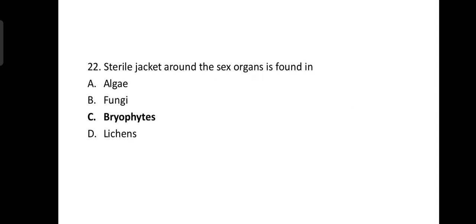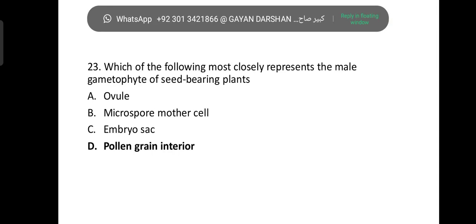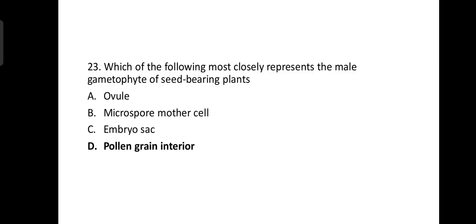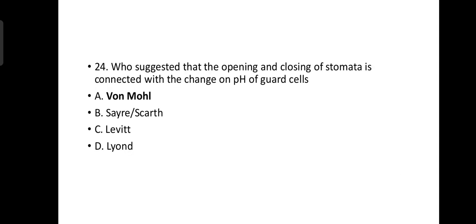A sterile jacket is found around the sex organs of bryophytes. Which one of the following most closely represents the male gametophyte of seed-bearing plants? Pollen grain interior. Who suggested that the opening and closing of stomata is conducted with the change of pH of guard cells? One mole.